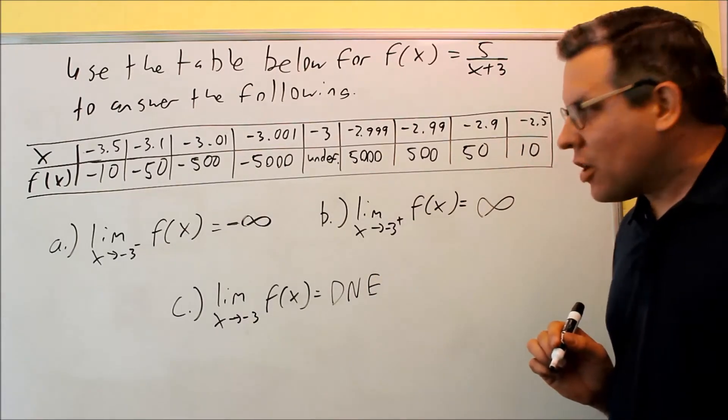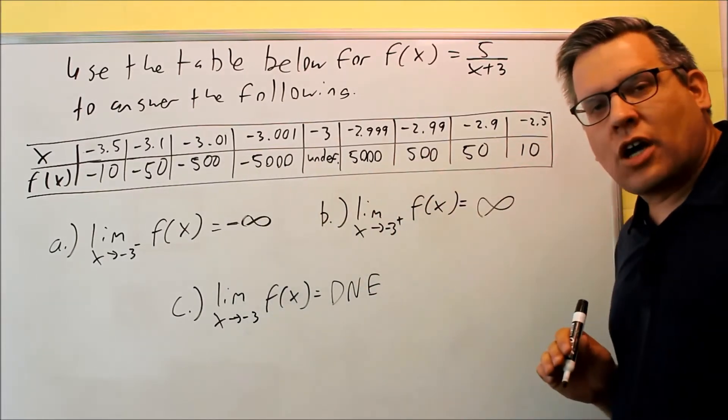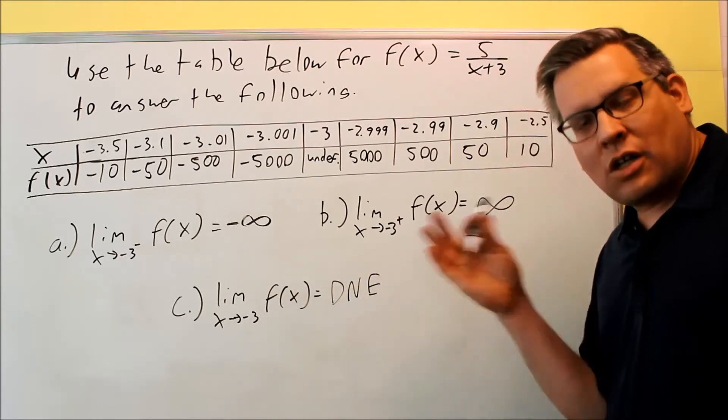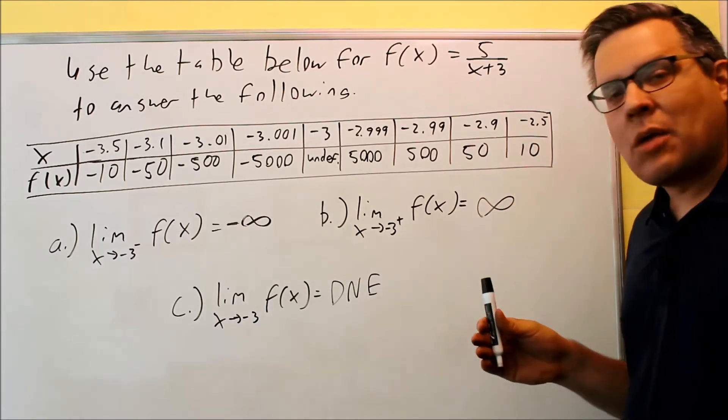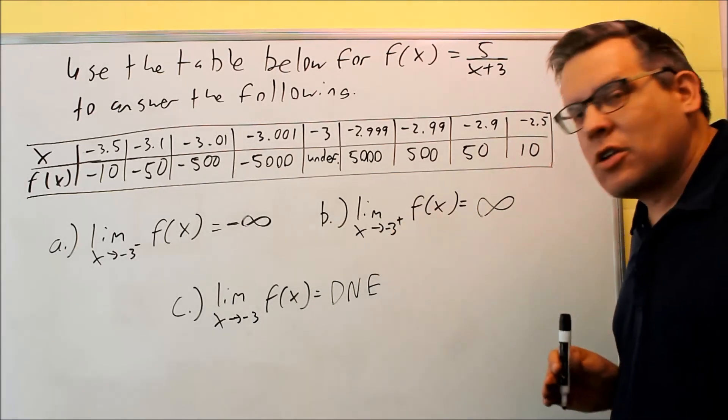That does not exist because, again, the left and right-hand limits do not equal each other. In order for this limit to exist and equal a number, we have to have it approaching the same thing on both sides. So again, that's why this is going to be DNE.